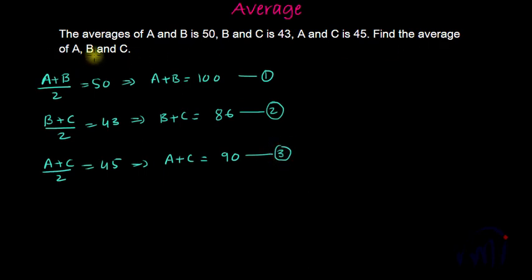We have to find the average of A, B and C. This is A plus B is equal to 100. This is B plus C equal to 86. And this is A plus C equal to 90.